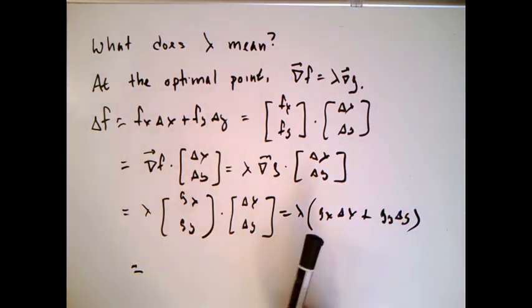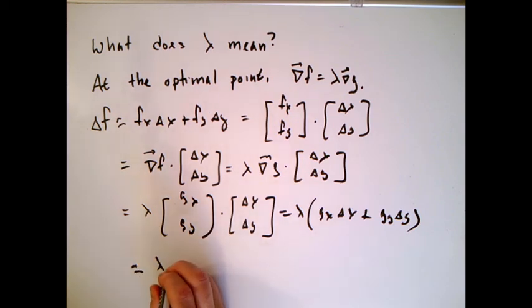And we're going to remember this as being roughly the change in g. So we get lambda times the change in g.